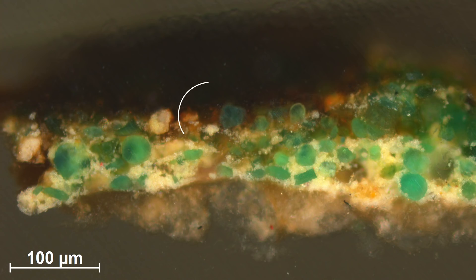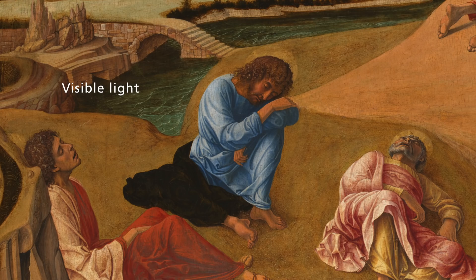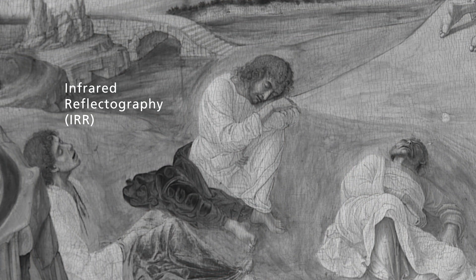This binder reacts with copper and is discoloured. So although the pigment particles are still green in colour, St James's cloak is now brown and the modelling is barely visible.